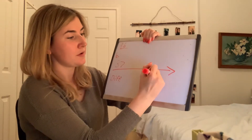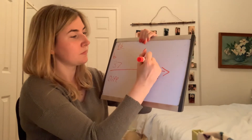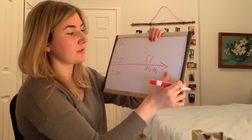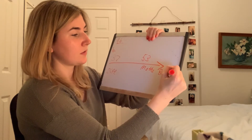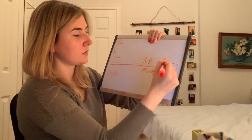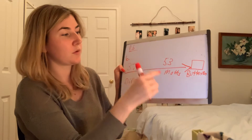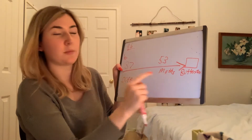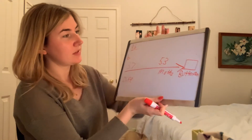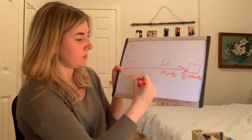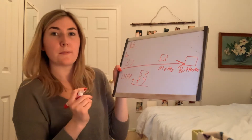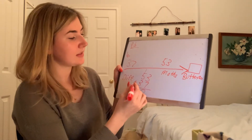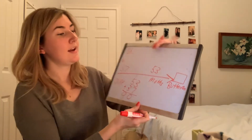How many butterflies were there? That's our question and our missing information. We know there were 37 fewer moths than butterflies, and 53 moths. Since the butterflies will be a larger amount than the moths, we'll have to add. So we have 53 plus 37: 3 plus 7 equals 10, carry the 1, then 1 plus 5 equals 6, and 6 plus 3 equals 9. So how many butterflies were there? 90.